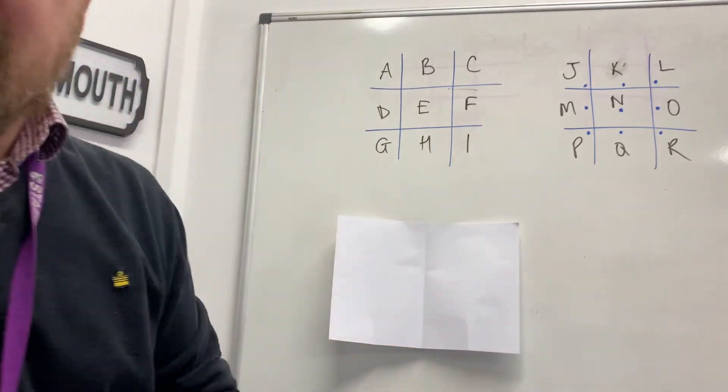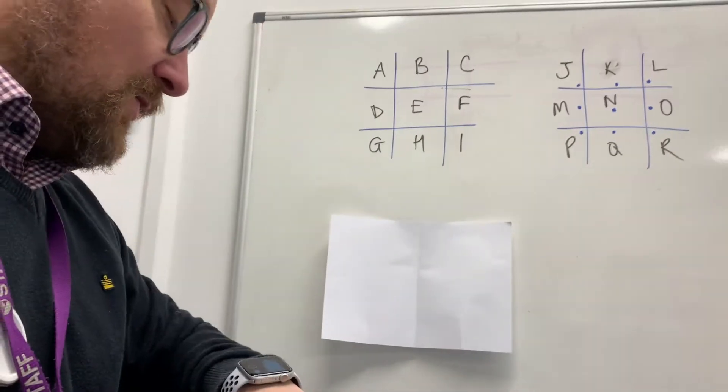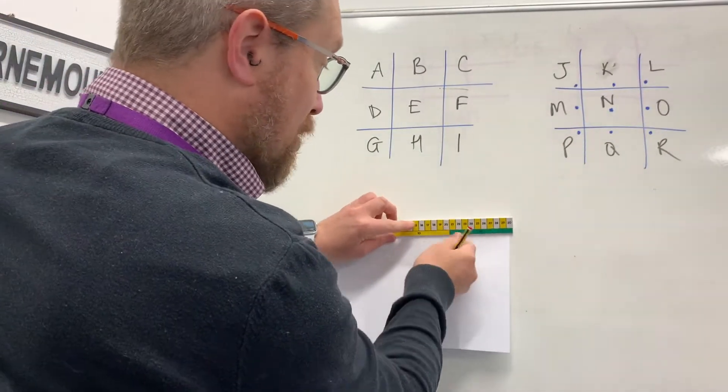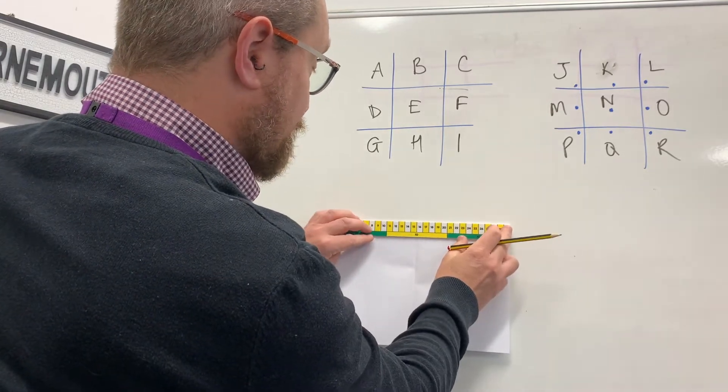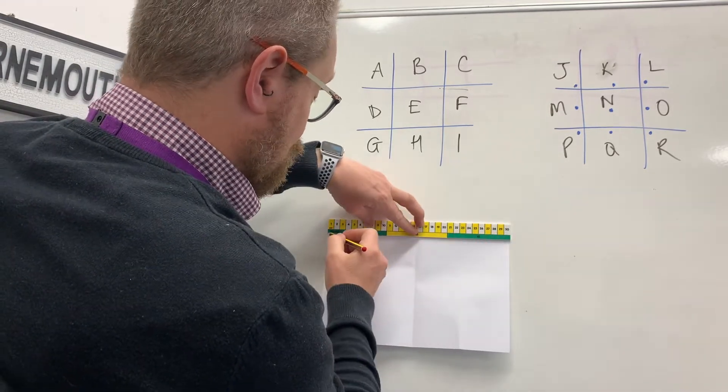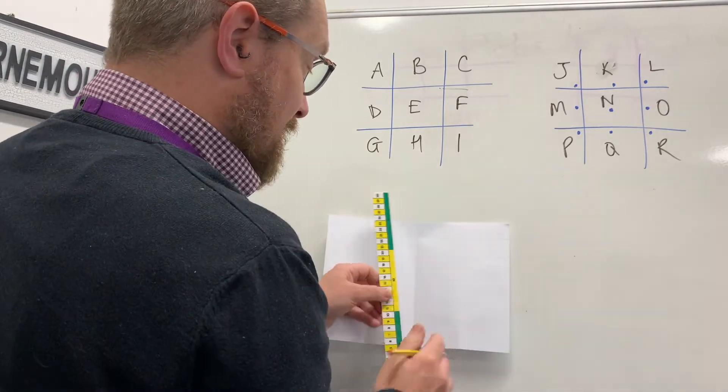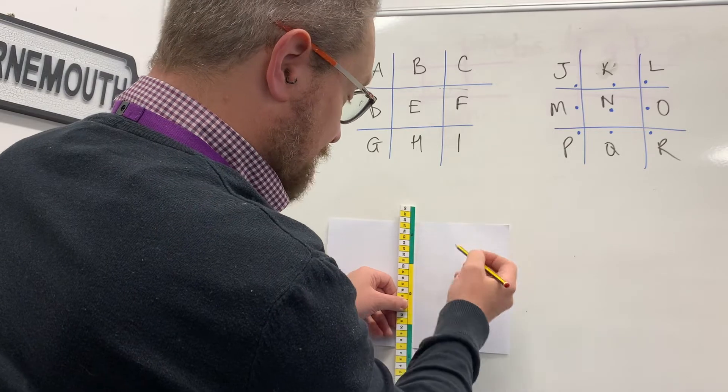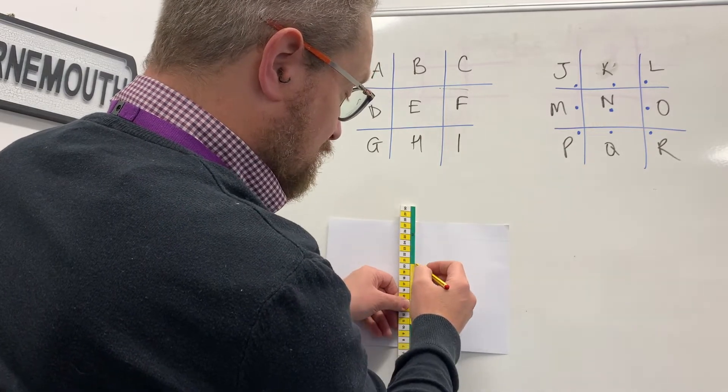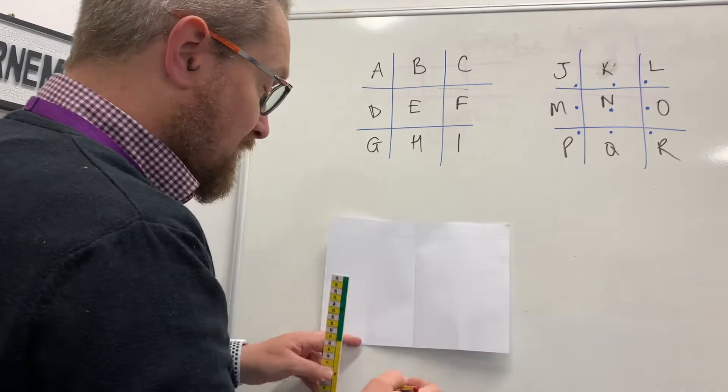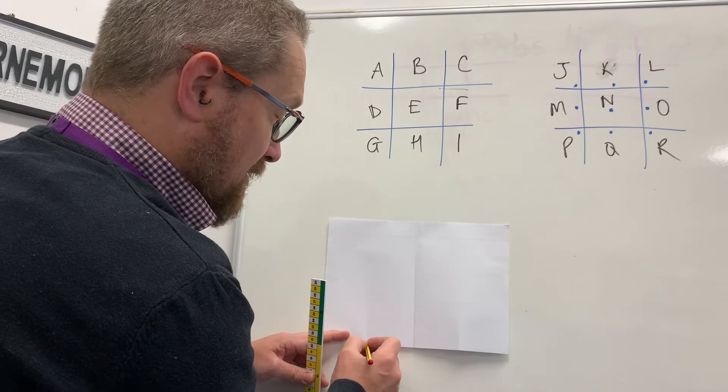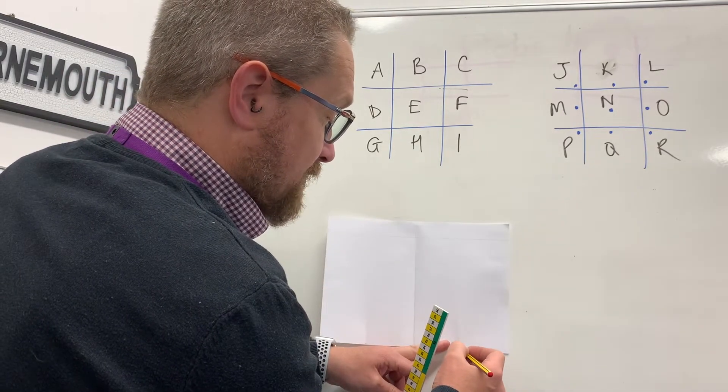So the first thing we need on our bunting is we need a bit at the top to fold over. So I'm going to use a ruler and I'm going to just draw that line across the top like that, and that means I've got something to fold over now and we're going to make two bits of bunting here. So this line down the middle, which you can't see, but that line down the middle is there. I've got here a bit where I folded it in and another bit where I folded it in here.